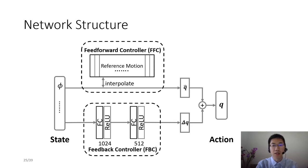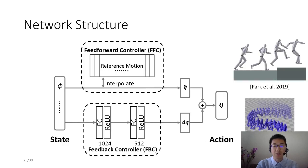Our policy network consists of an open-loop feedforward controller and a feedback controller. The feedforward controller looks up the kinematic reference motion and outputs the default target joint angles. The feedback controller is a trained neural network that outputs corrections to the feedforward network. This structure is inspired by previous works where controls are decomposed into a feedforward component and a feedback component.